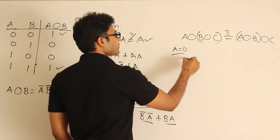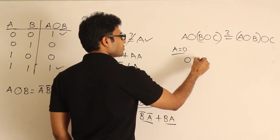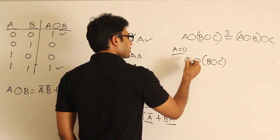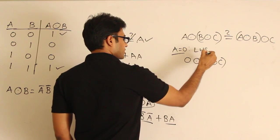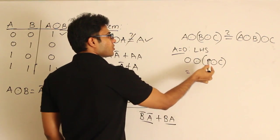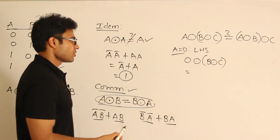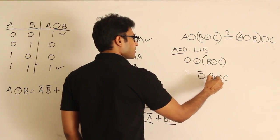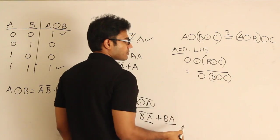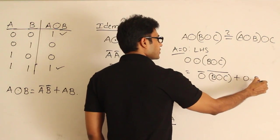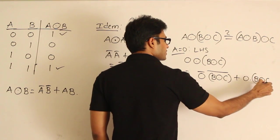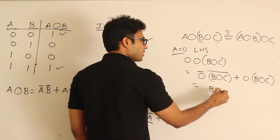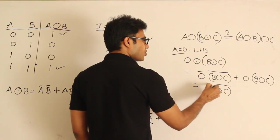If I put A=0 on the left-hand side: (0 XNOR B) XNOR C. Expanding 0 XNOR B using A'B' + AB gives 0'B' + 0·B = B'. So the LHS becomes B' XNOR C, and further we get (B XNOR C) whole complement.